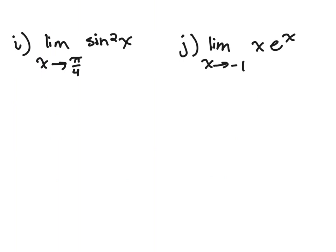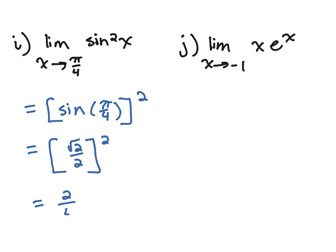In problem I, we're going to plug in the pi over 4. And remember sine squared x is the same thing as sine of x all squared. Sine of pi over 4 is the square root of 2 over 2. And if we square this, we'll get 2 over 4 or 1 half.